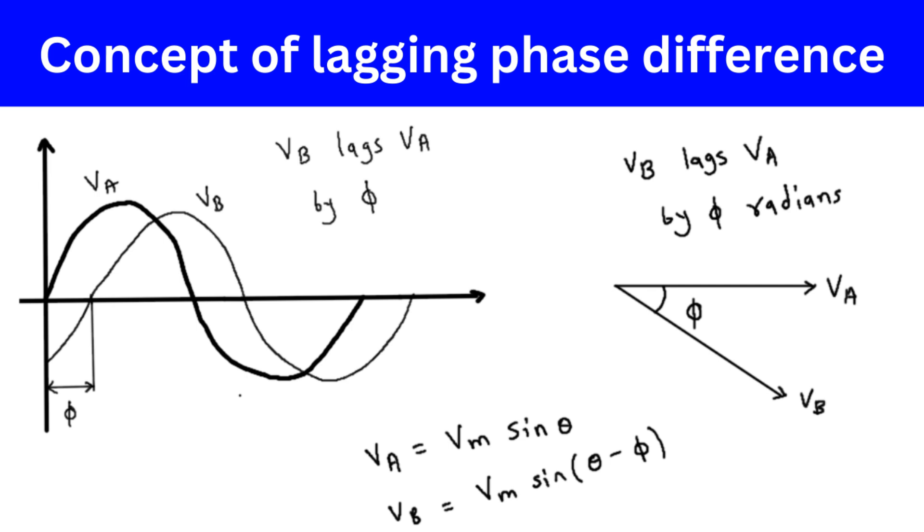The length of the phasor vectors represents the amplitudes of Va and Vb, respectively. The resulting phasor diagram will show the relative magnitudes and phases of Va and Vb.